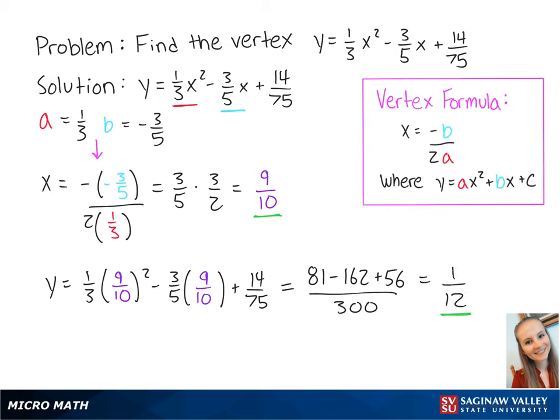Now we know that the vertex is nine over ten, one over twelve. This is the final answer.